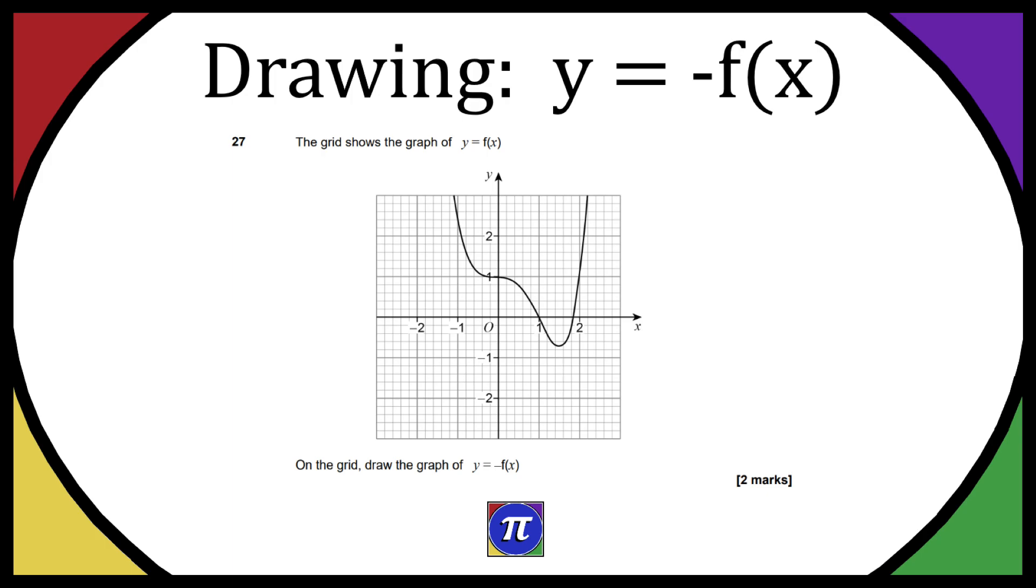So question 27 the grid shows the graph of y equals f of x. We have our graph here and then on the grid we need to draw the graph of y equals minus f of x.